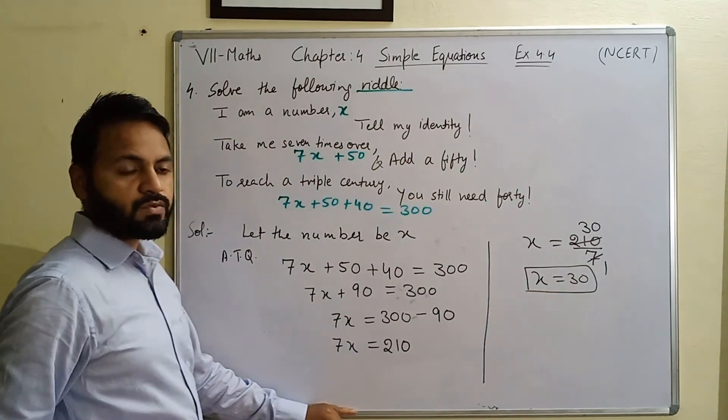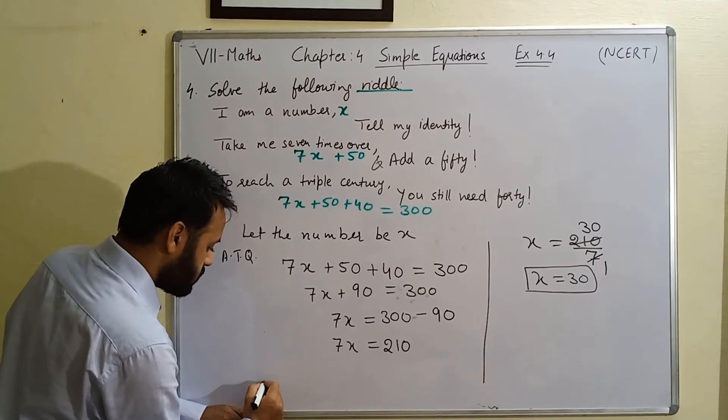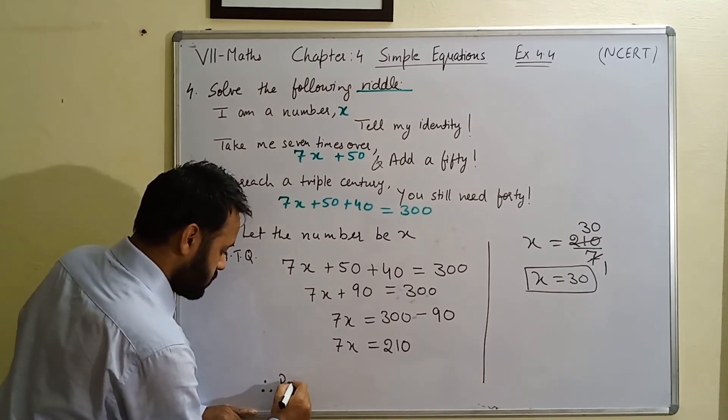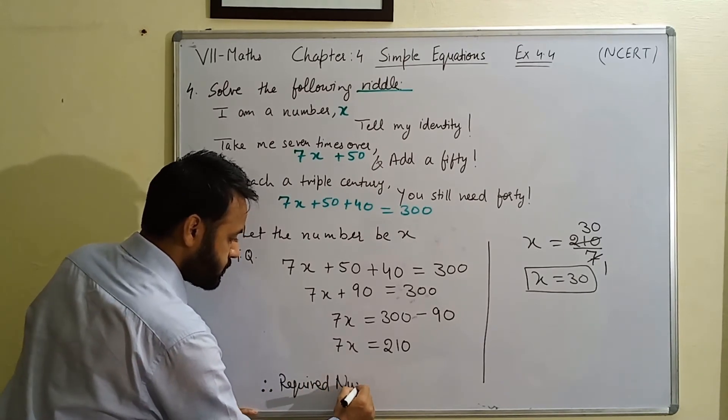So the number that is required here is 30. Therefore, required number is equals to 30.